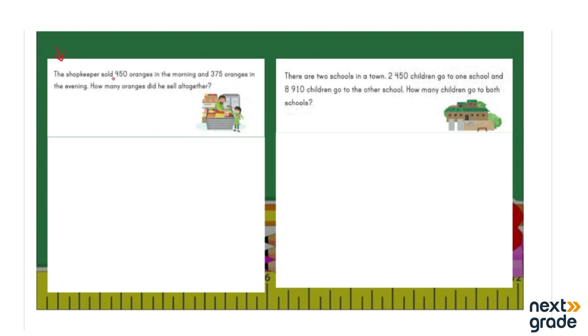Let's read the word problem. The shopkeeper sold 450 oranges in the morning and 375 oranges in the evening. How many oranges did he sell all together?